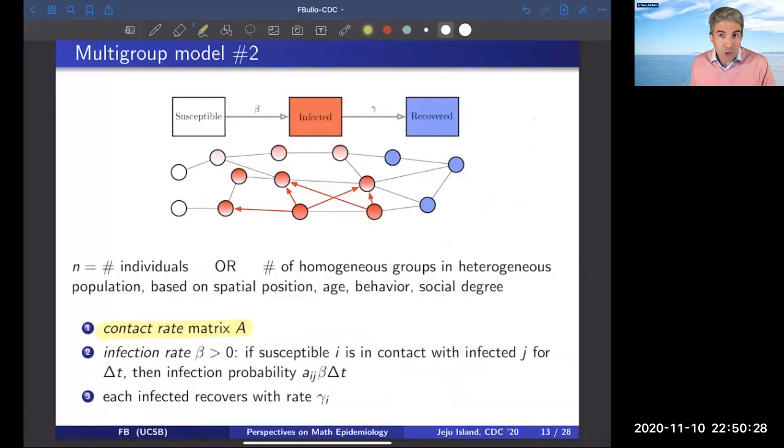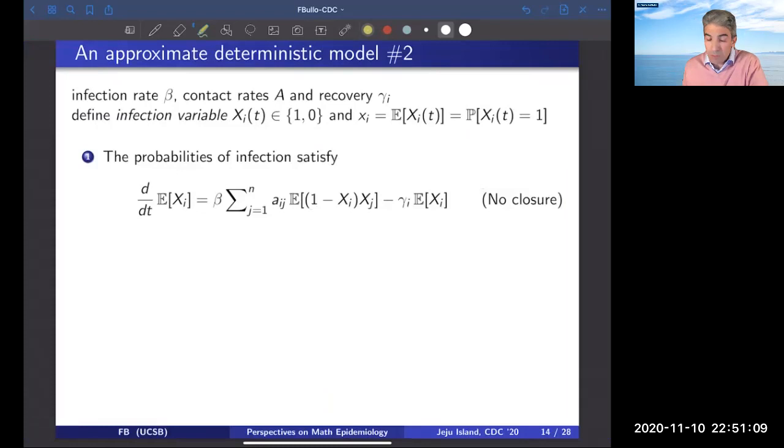This model is characterized by various parameters: a contact rate A describing how likely it is that individuals I and J meet at what rate. There is an infection rate beta. The likelihood that an individual I would be infected when meeting individual J who is infected, I being susceptible, is proportional to A_IJ beta delta T. So the likelihood of meeting, the infection rate, and the duration of contact. And finally we have a recovery rate gamma_I. It turns out that this is a stochastic model, and it's natural to perform an analysis looking at the expected value of the infection variable.